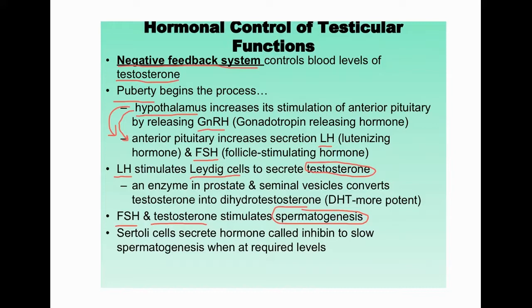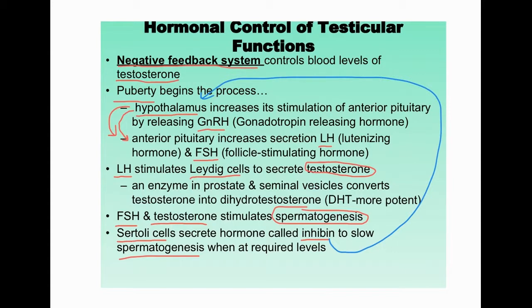Sertoli cells secrete a hormone called inhibin, which slows spermatogenesis when sperm are at required levels. This is a negative feedback loop: inhibin goes back and inhibits the hypothalamus from releasing GnRH. Also, increased testosterone does the same — it inhibits the release of GnRH, telling the hypothalamus to slow down the whole process.